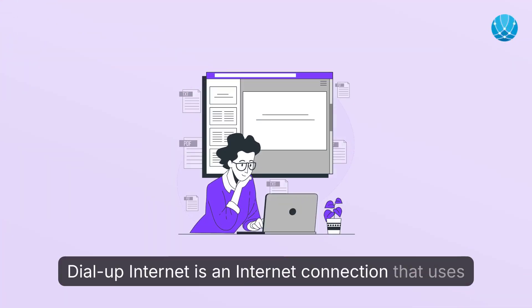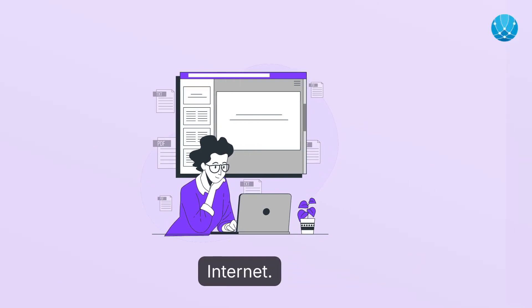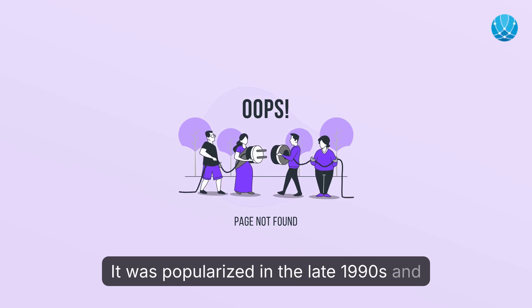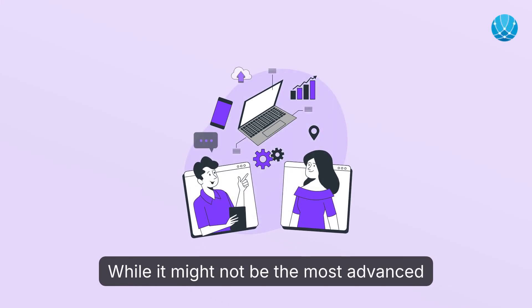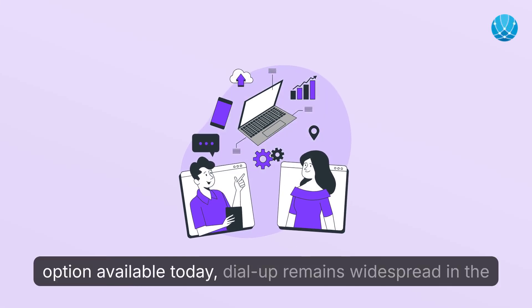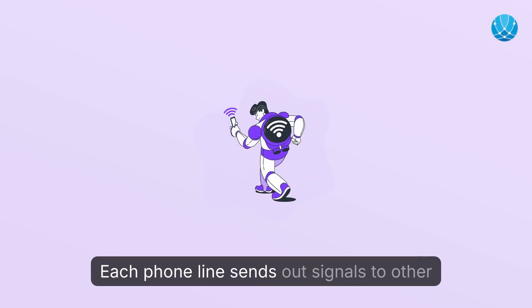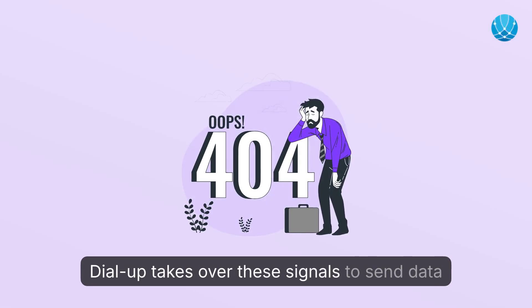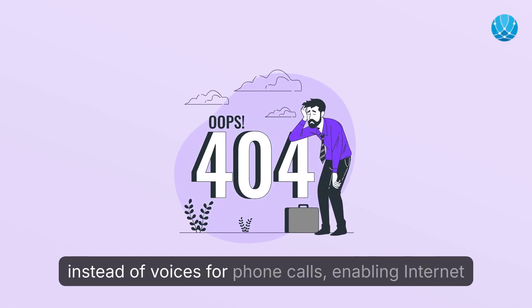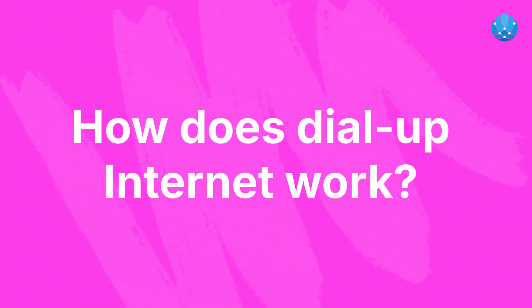Dial-up internet is an internet connection that uses telephone wires to connect a device to the internet. It was popularized in the late 1990s and early 2000s. While it might not be the most advanced option available today, dial-up remains widespread in the US. Each phone line sends out signals to other devices; dial-up takes over these signals to send data instead of voices for phone calls, enabling internet access through existing phone lines.